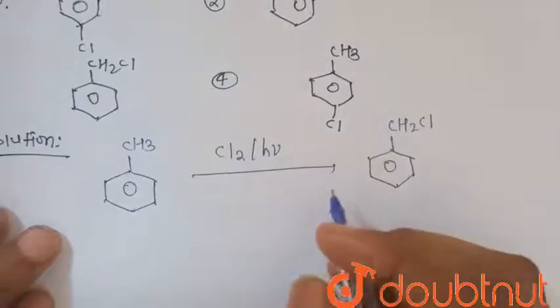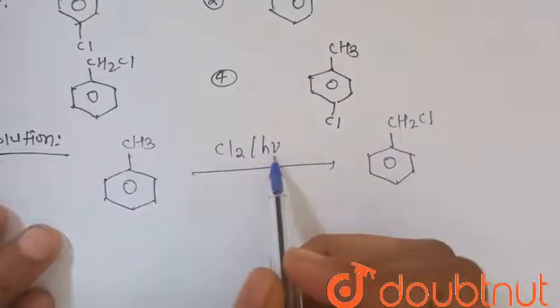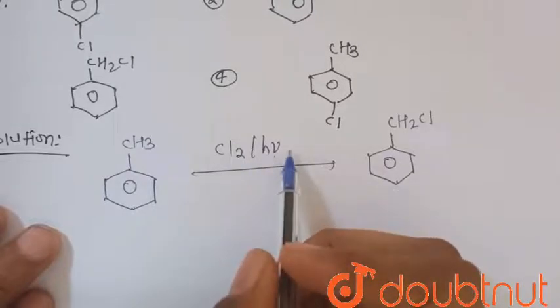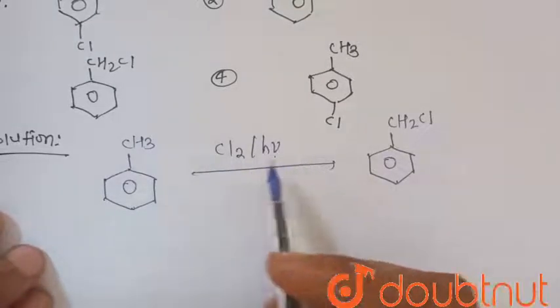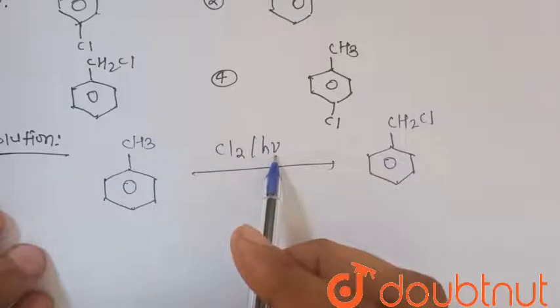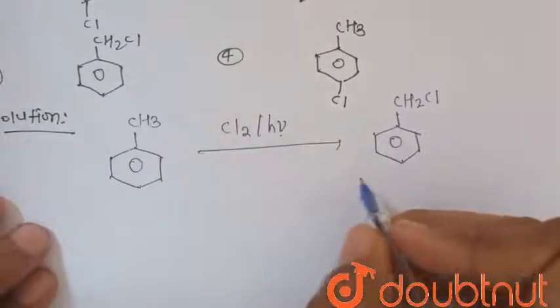This is the free radical mechanism reaction, because here light is used, that is sunlight is used and chlorine. Chlorination in the presence of sunlight is the free radical reactions.